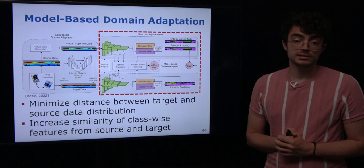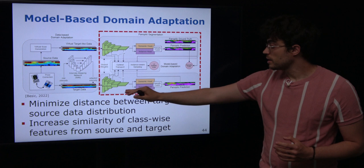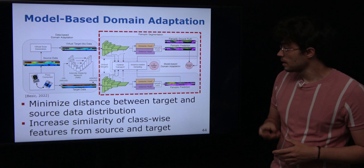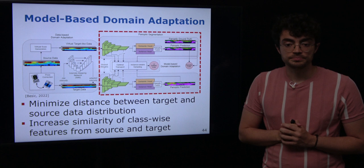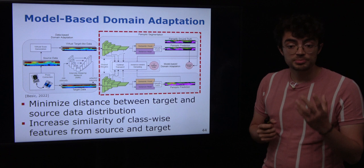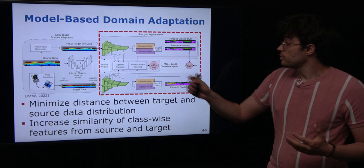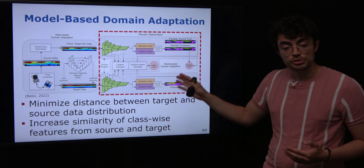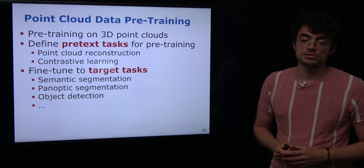Another way is model-based domain adaptation. We have the source domain with labels and train the model on it. For the target domain we only have predictions — no labels. Given the predictions from both source and target domains, we try to increase the similarity between their data distributions. We also get per-class feature representations from predictions in both datasets and try to match this per-class feature representation between source and target. In this way, we train only on the source domain but encourage the target domain's data distribution to match the source domain's distribution.